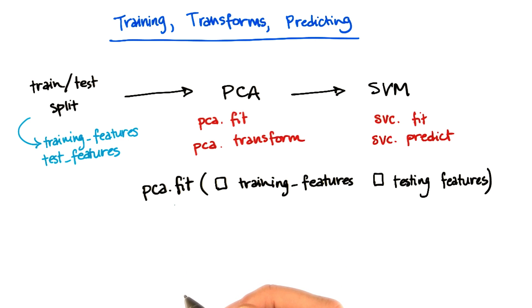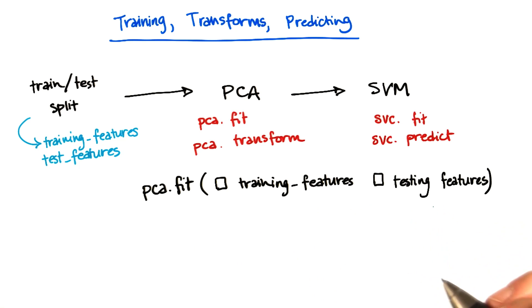Specifically, you want to find the principal components using the fit command. Do you want to apply the PCA.fit to the training features or to the testing features?